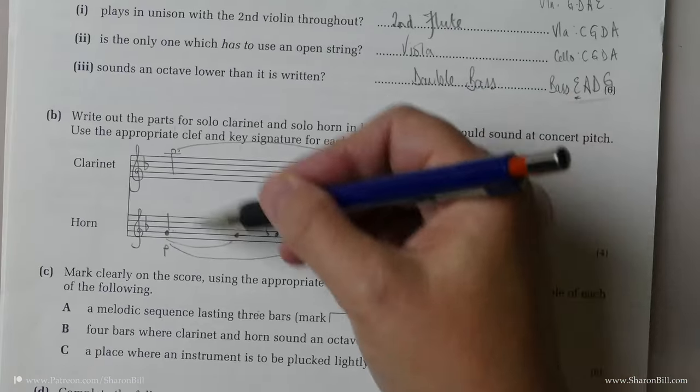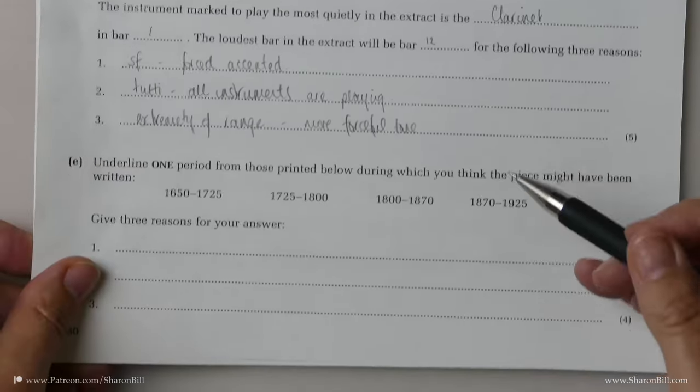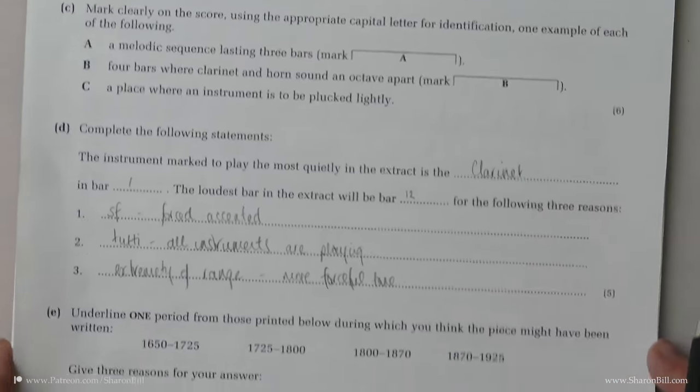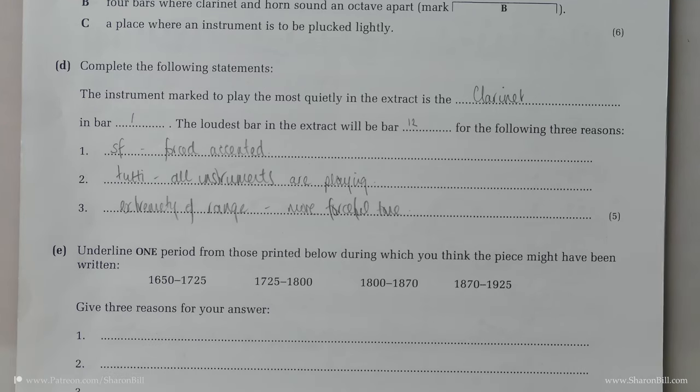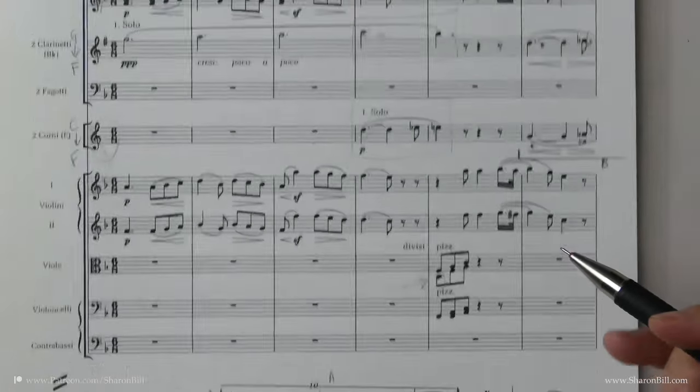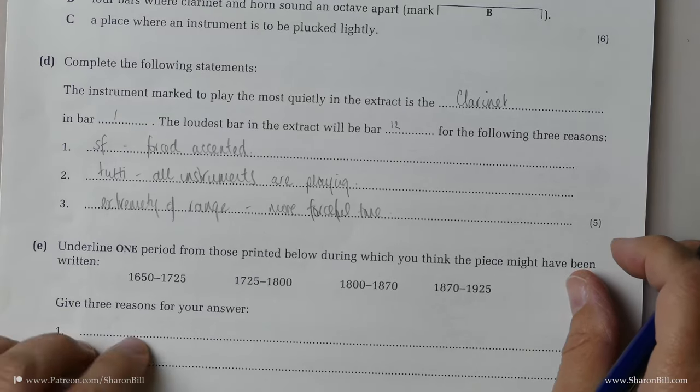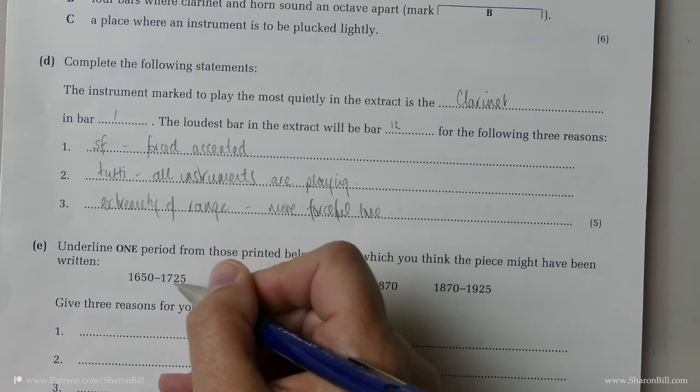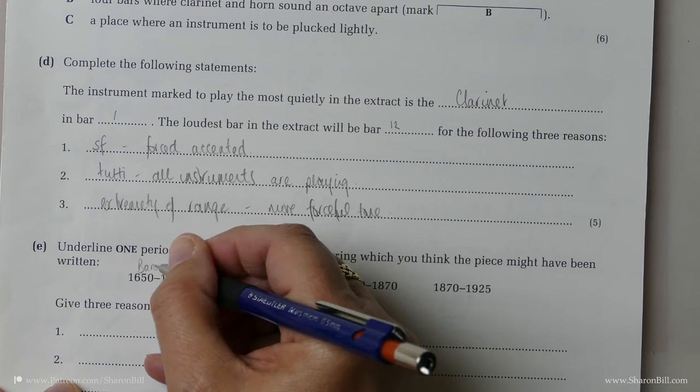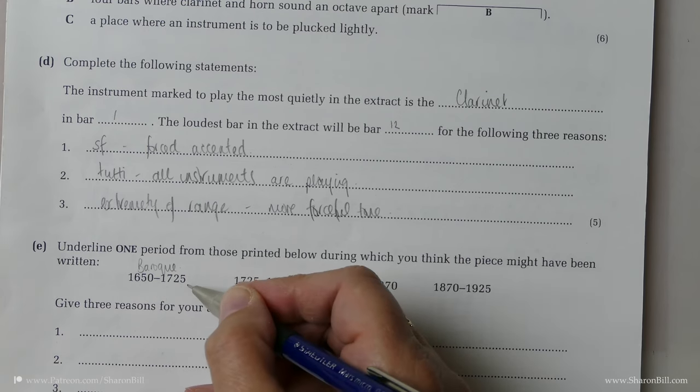And now we sort of pull back even further. We've done some kind of microscopic work here. And now in this final question, we're going to have to pull back even further. And we're just going to kind of widen our gaze and look at the score and think, what sort of music is it that we're playing here? And we need to choose a period of music. And so generally speaking, here we're looking at a Baroque period piece in this era, sort of moving to the end of that period.